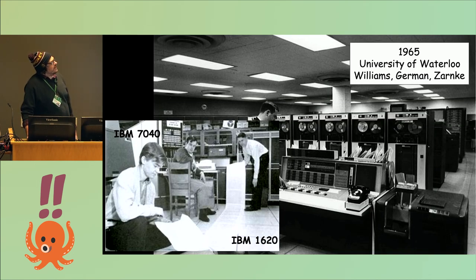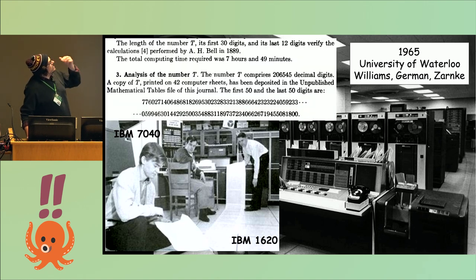Then we fast forward to 1965 and University of Waterloo. They got this cool IBM 7040 with 32K of memory and they decided to compute this thing. I know that's not as impressive as 434-bit modular arithmetic on a Commodore 64, but they do this. It takes 7 hours and 49 minutes to compute. They publish the first and last 50-digit numbers. There was a group also in 1889 that spent 4 years computing digits, computed 30 digits at the front and 18 digits at the back.